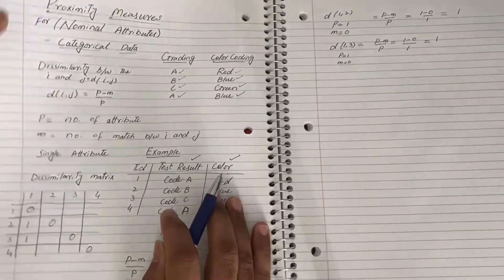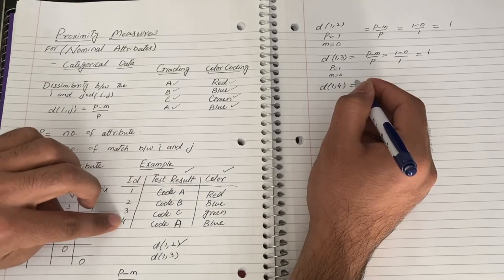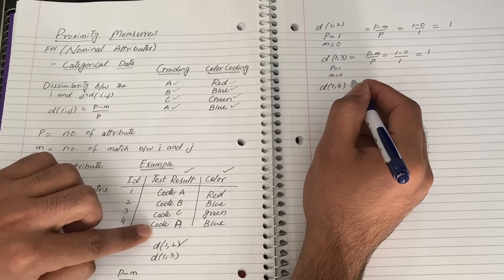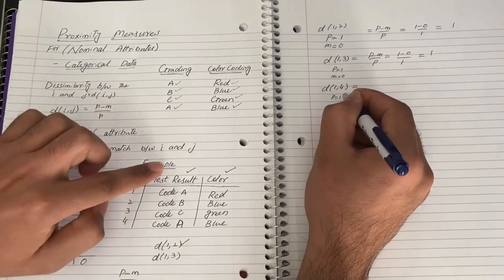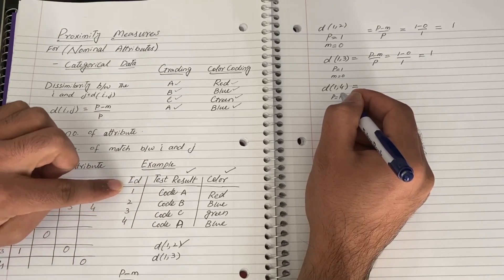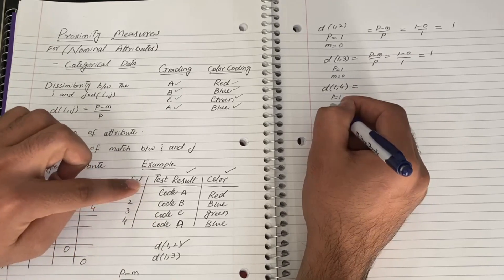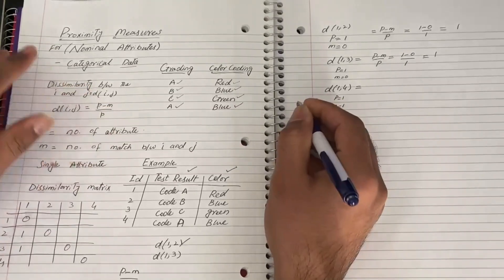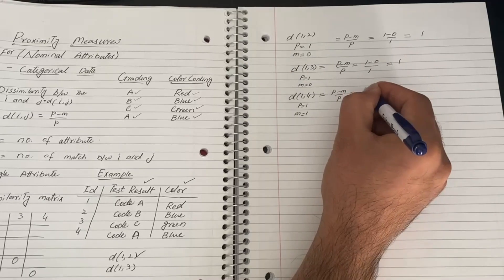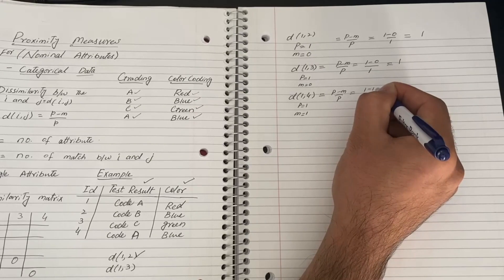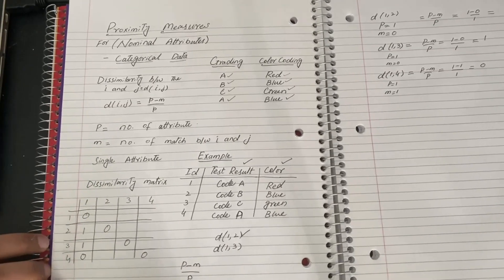For d(1,4): object 1 is Code A and object 4 is also Code A — they are matching. So m equals 1. Therefore d(1,4) = (1 - 1) / 1 = 0 / 1 = 0. So d(1,4) equals zero.